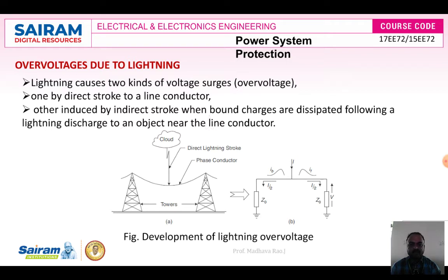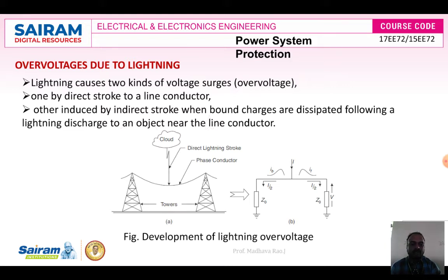An indirect stroke means when bound charges are displaced following a lightning discharge to an object near to the line conductor. When lightning strikes near to the line conductor, that is called an indirect stroke. Due to that, overvoltage also occurs. So direct stroke means stroke directly to the conductor, and indirect stroke means the stroke near to the power transmission conductor.